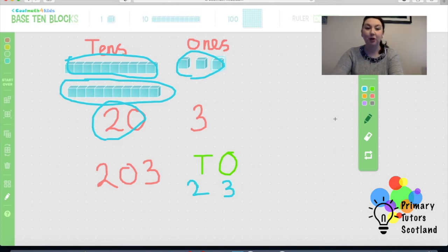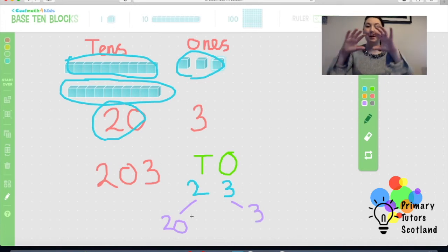Now to partition that or to split it, well we've actually done it the opposite way because what does this 2 stand for? It's not the number 2. It is 2 tens which gives me 20, and then how many ones do I have? 3. So then that is us partitioning or splitting that number up.